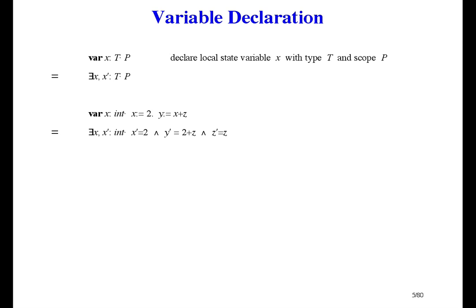We can get rid of exists x because x just doesn't occur in the body. And we can get rid of exists x prime by a one-point law, leaving y prime equals 2 plus z, and z prime equals z.